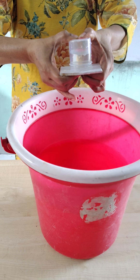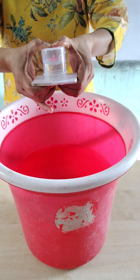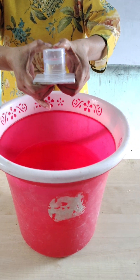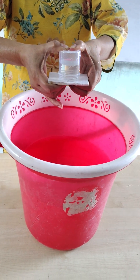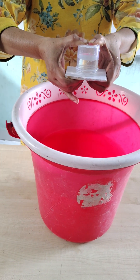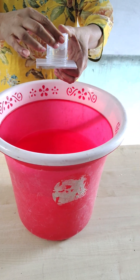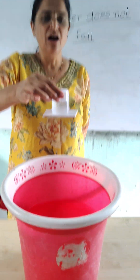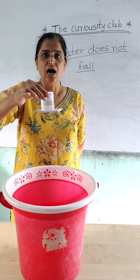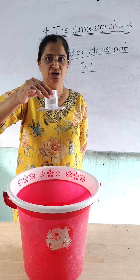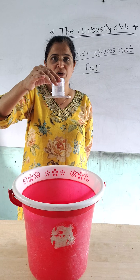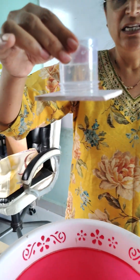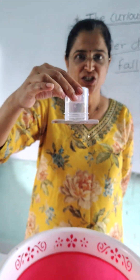Then you have to invert the glass and apply some force. The activity's name is 'Water Does Not Fall.' The water does not fall because the outside atmospheric pressure is more than the inside atmospheric pressure. This activity shows the properties of air pressure.